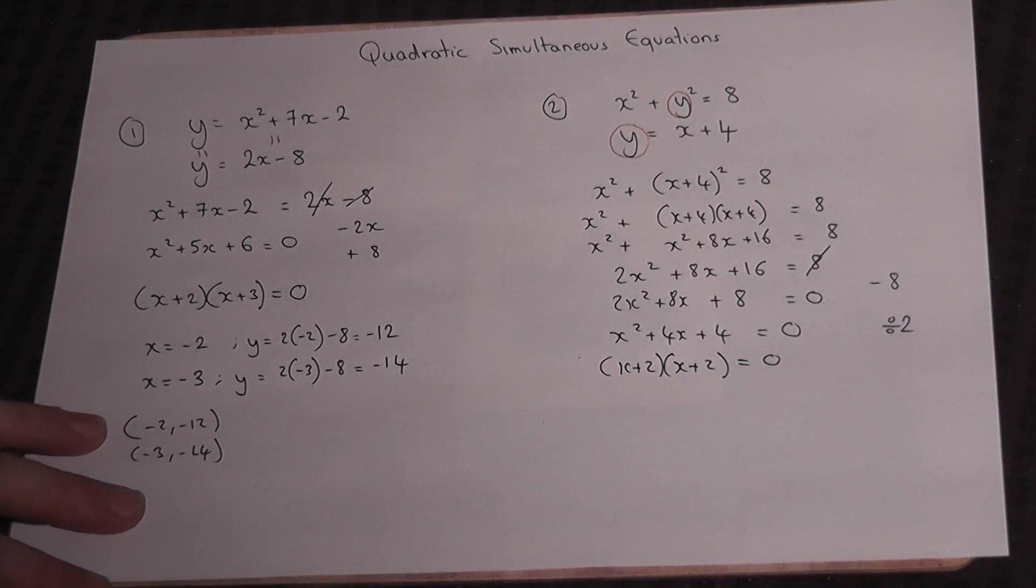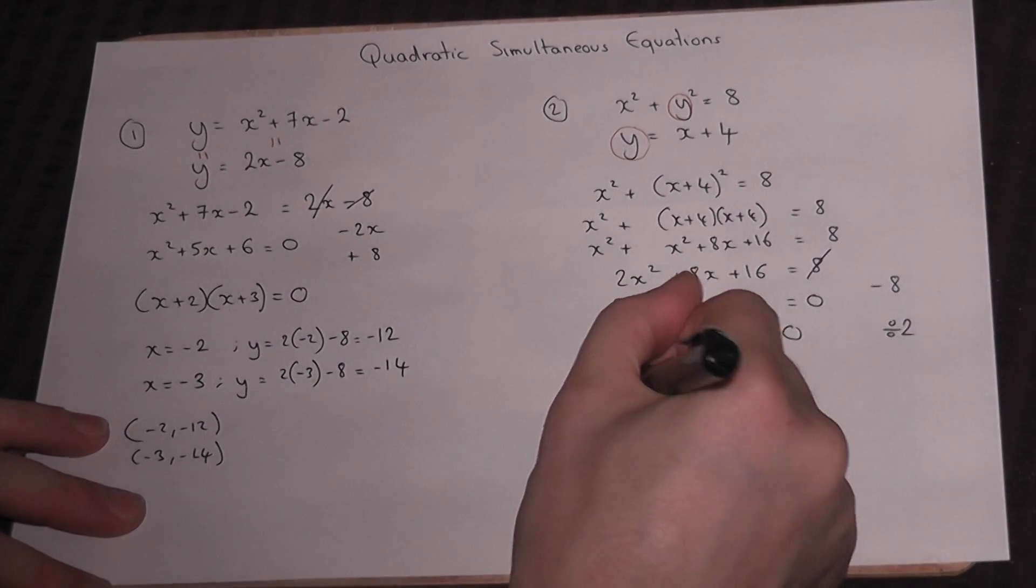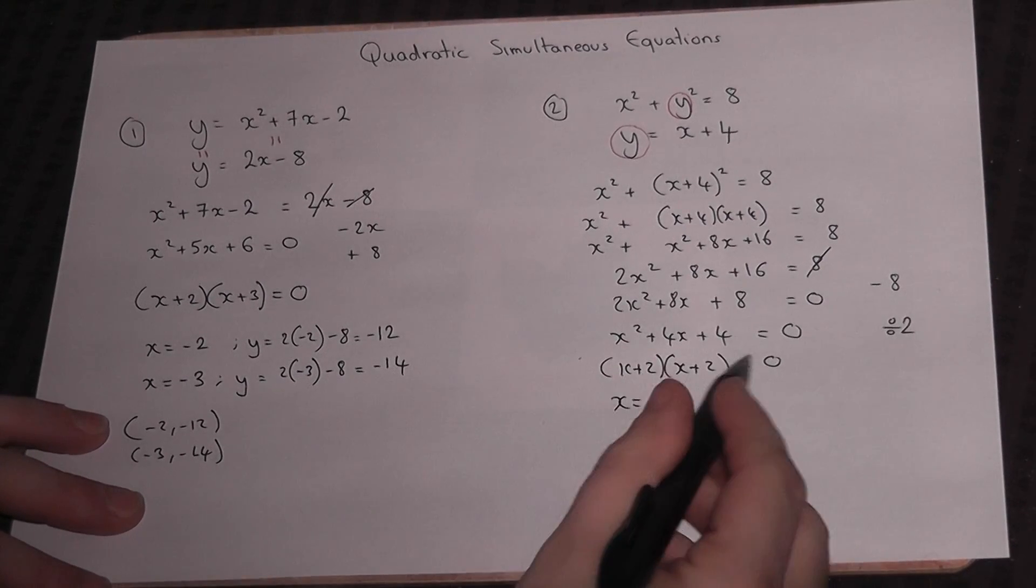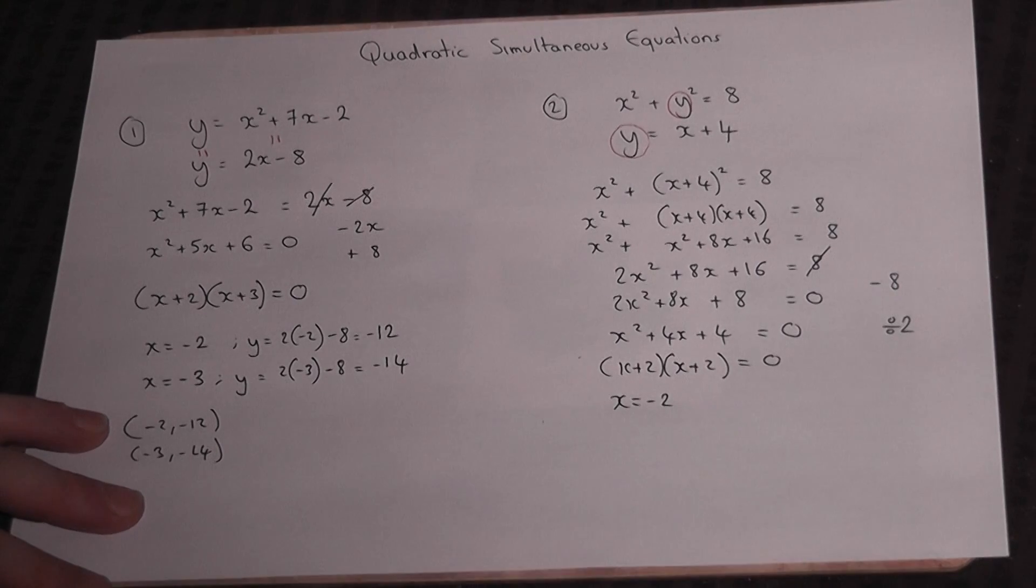And so the solution, and there's one solution, is x must equal minus 2, because minus 2 plus 2 is 0. And the same in that bracket there.